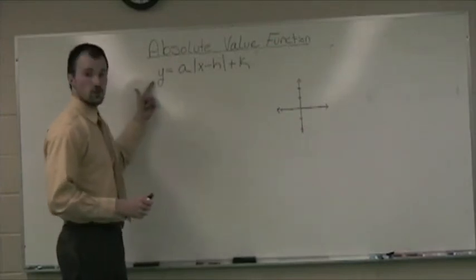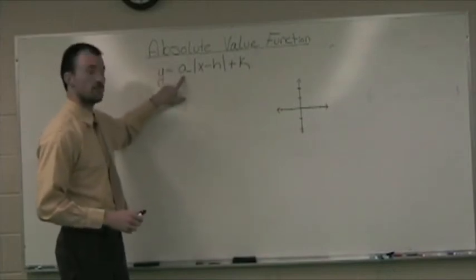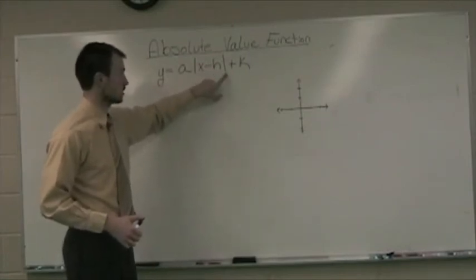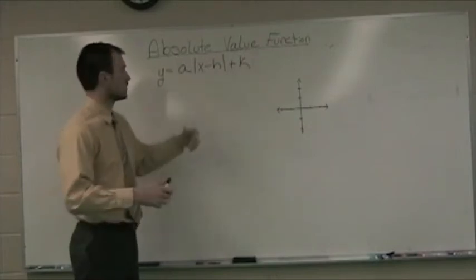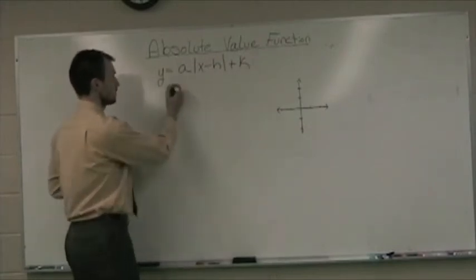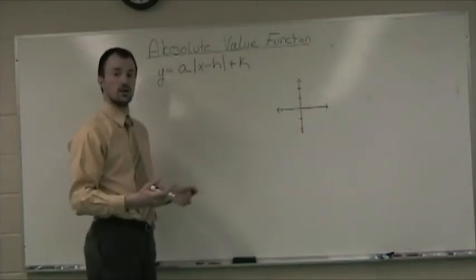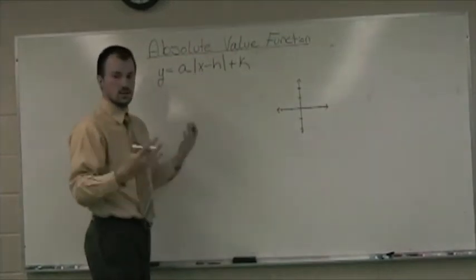To look at the general form of our equation, it's always going to be of the form y equals some value a times the absolute value of x minus h, close that absolute value plus a quantity k. Now, this has a couple of different variables that we're going to have to describe and have to define. Y and x, we already know about.